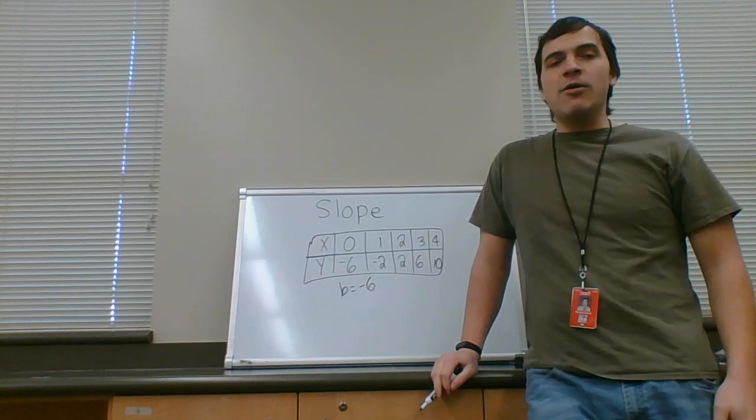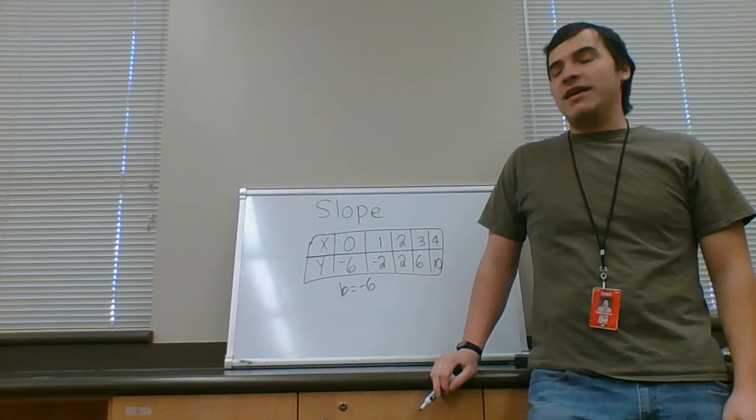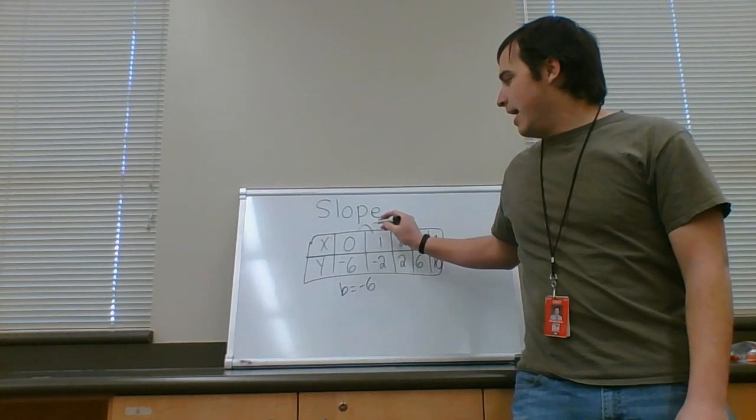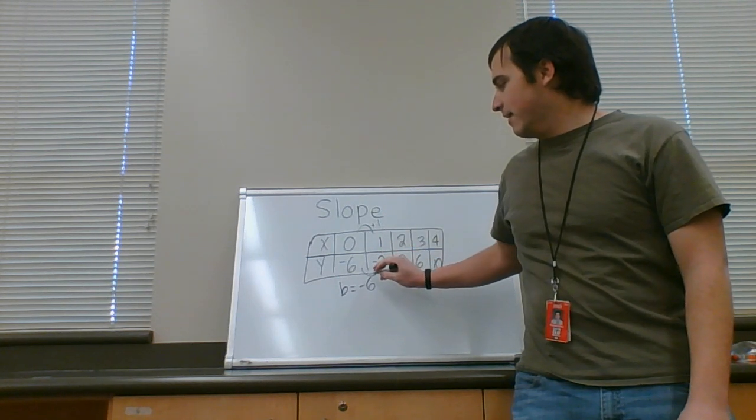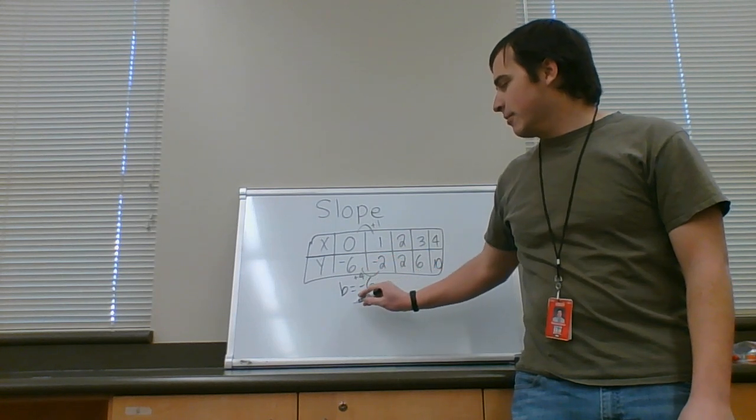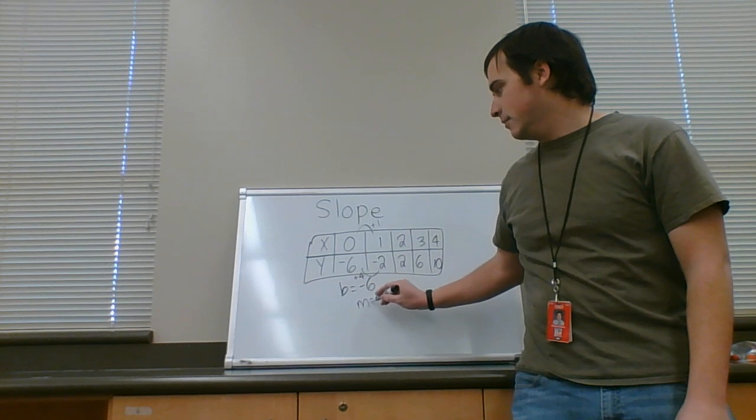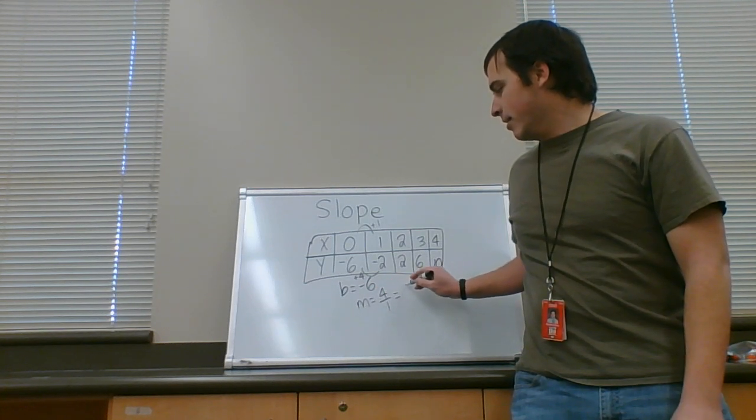Now we need to find the slope from this table. Pick any two points. It's just easy to go in order to me. The x goes from zero to one. That increases by one. Negative six to negative two goes up by four. Remember, slope is rise over run. Difference in y, which is four. Difference in x, which is one. Four over one, which is simply four.